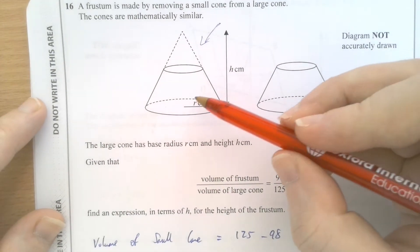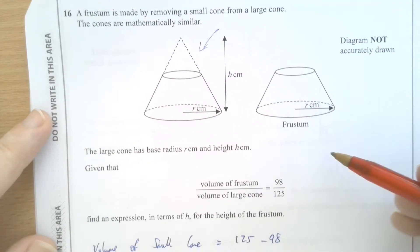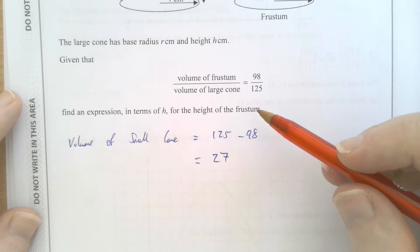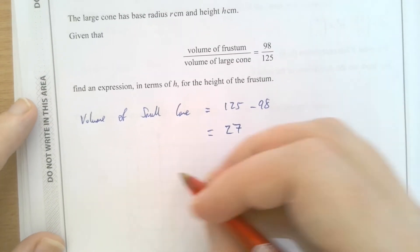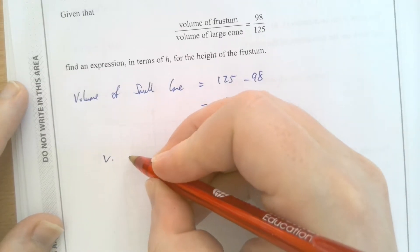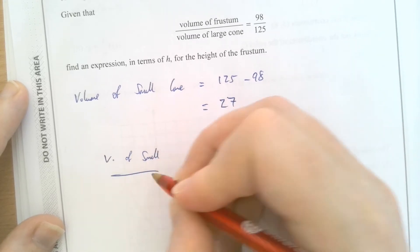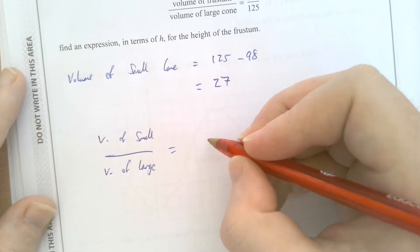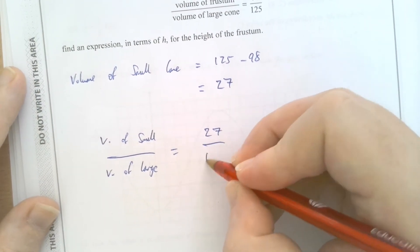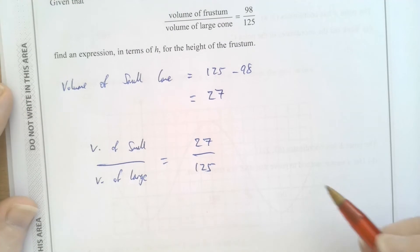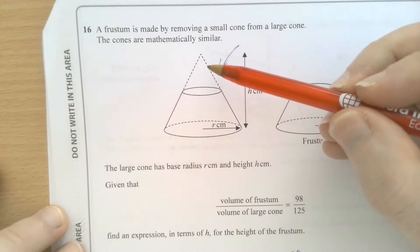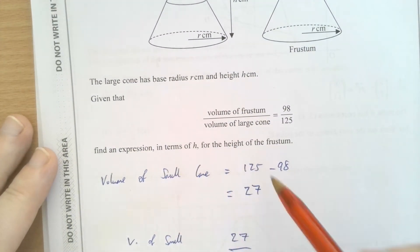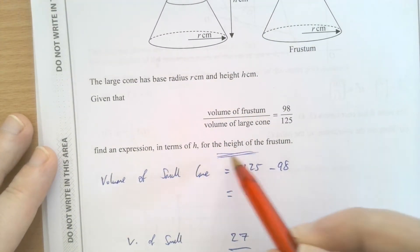And that's interesting because it gives me a kind of connection between all three of the shapes that I've got. The frustum, the large cone, and this small cone. So I can find ratios to do with the small cone and the large. I could say that the volume of the small cone divided by the volume of the large, for instance, would be 27 over 125. And that would allow me to compare the volume of the small one with the volume of the large one. But we're not asked for a volume in this question. We're asked for a height.